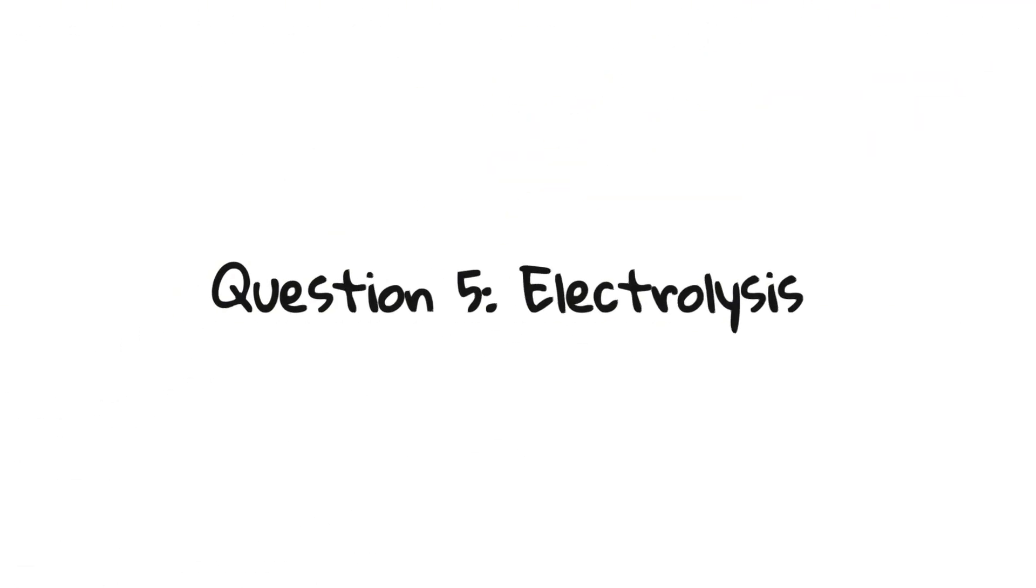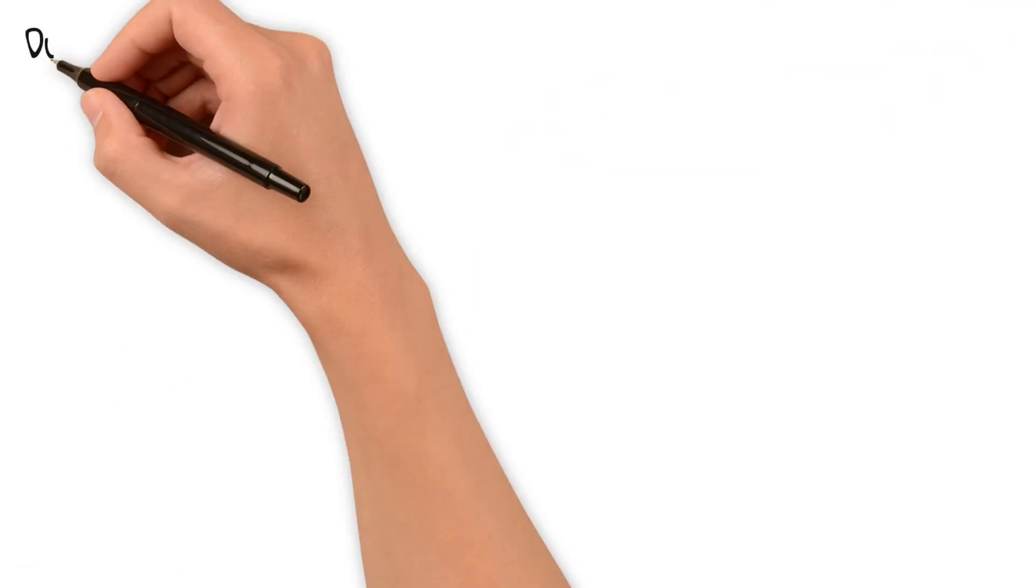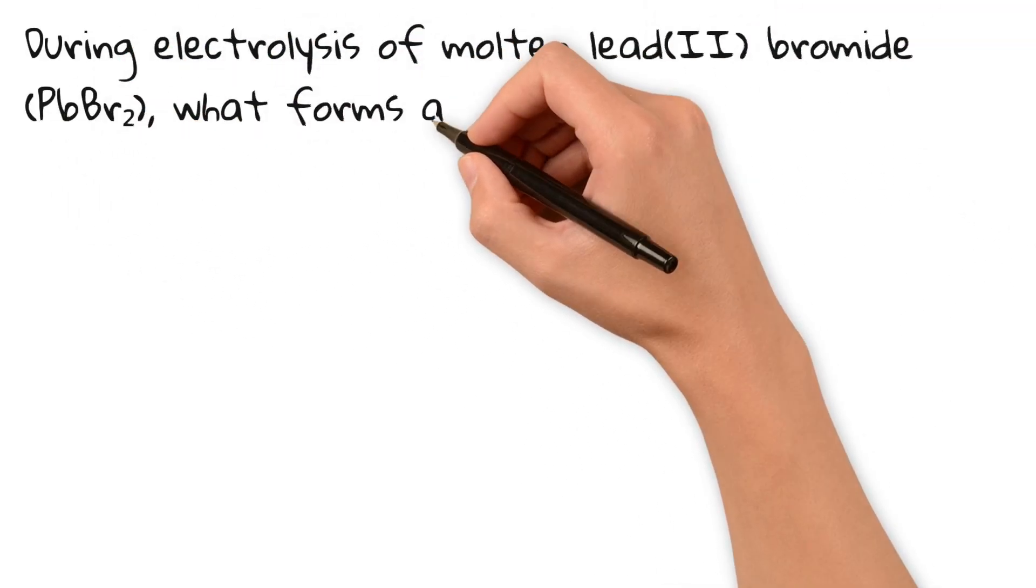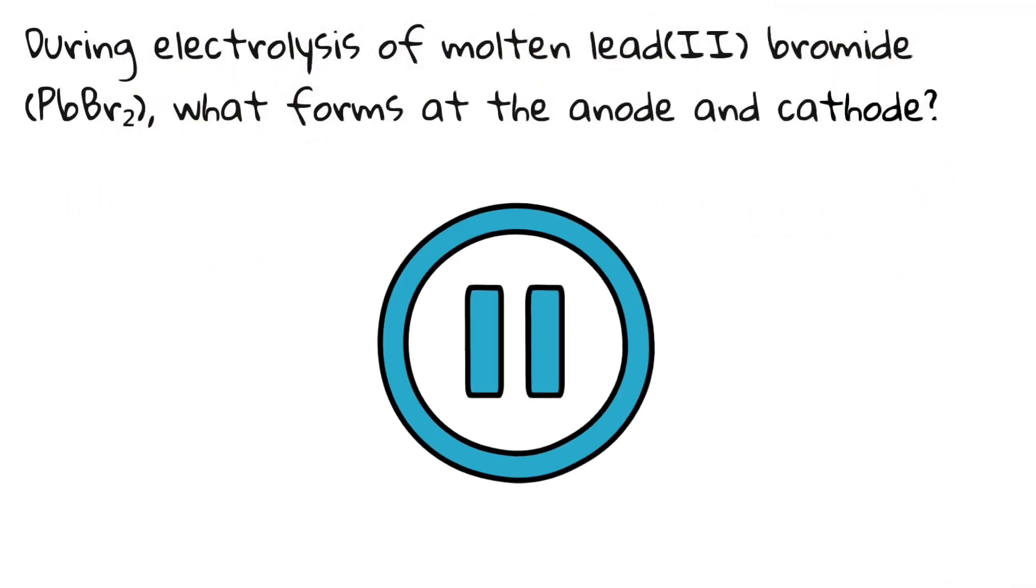Question 5. Electrolysis. During electrolysis of molten lead bromide, what forms at the anode and cathode? Pause the video and give it a try.